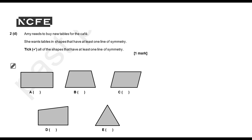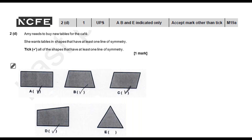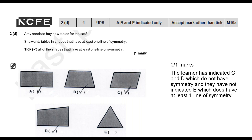Question 2D: Amy needs to buy new tables for the cafe. She wants tables in shapes that have at least one line of symmetry. Tick all of the shapes that have at least one line of symmetry. We can't give the learner a mark. Yes, they have indicated A and B, however they've also indicated C and D which do not have symmetry, and they have not indicated E which does have at least one line of symmetry. So no marks can be awarded.